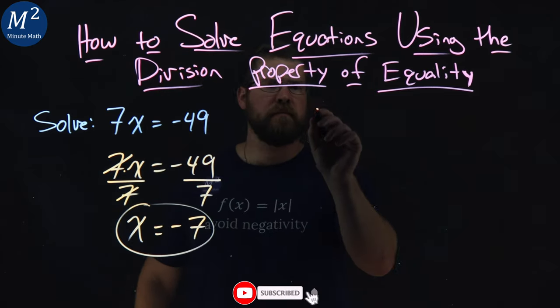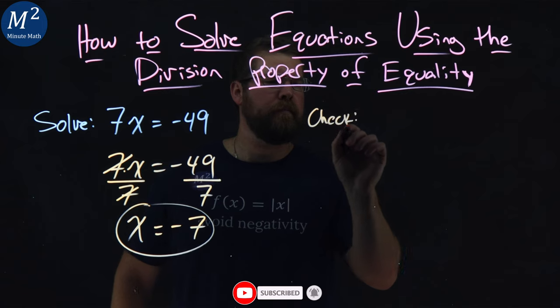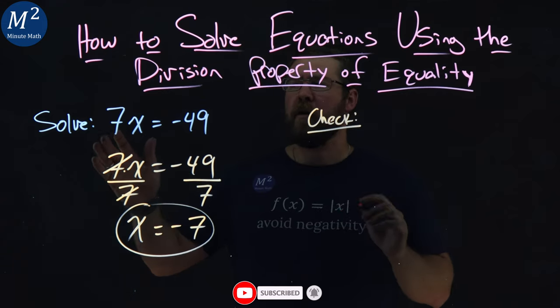Well, let's check it to be sure. To check it, we rewrite our equation: 7x equals negative 49.